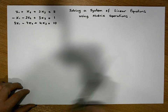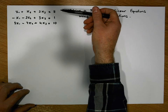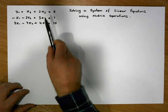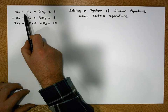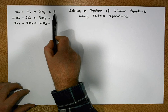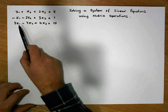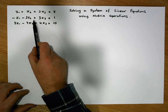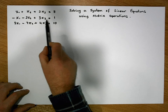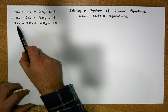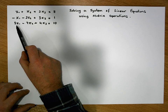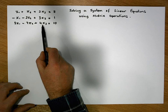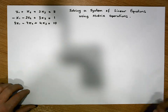For this example, I've chosen three linear equations. The first one is x1 plus x2 plus 2x3 equals 8. The second one is minus x1 minus 2x2 plus 3x3 equals 1. And the third one is 3x1 minus 7x2 plus 4x3 equals 10.